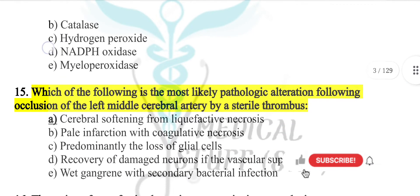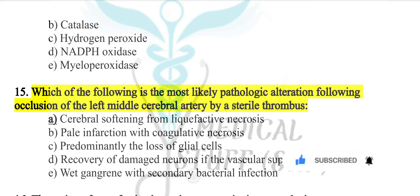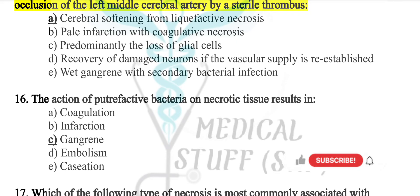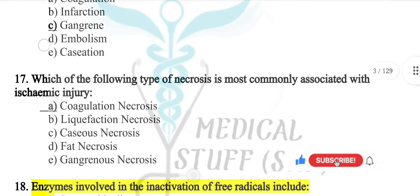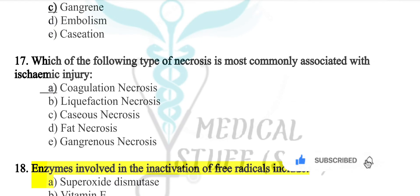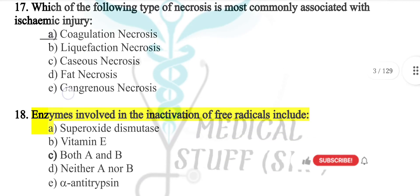The most likely pathological change following occlusion of the left middle cerebral artery by sterile thrombosis is cerebral softening from liquefactive necrosis. The action of putrefactive bacteria on necrotic tissue results in gangrene. The type of necrosis most commonly associated with ischemic injuries is coagulative necrosis.